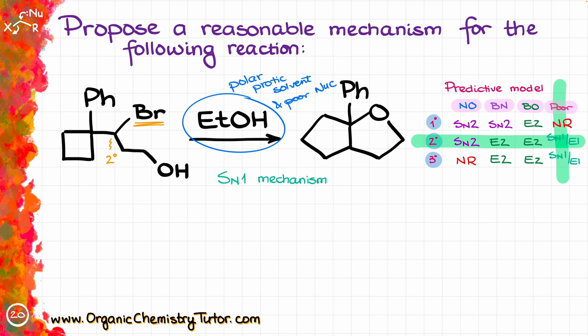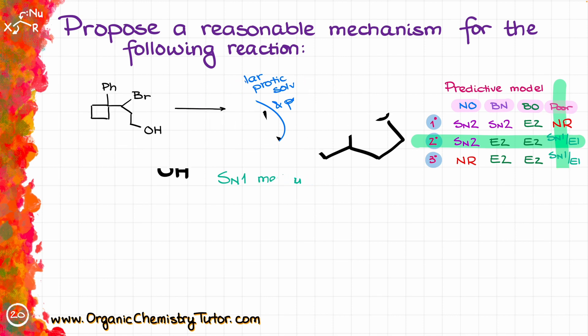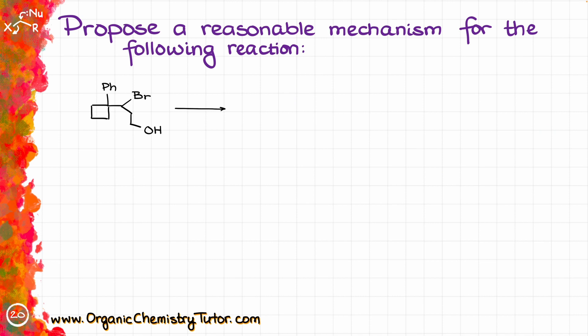First of all, let's redraw our molecules to make writing this mechanism more manageable. The first thing I'm going to do is the leaving group dissociation. I'm going to show the bromine popping off our molecule, giving us the corresponding secondary carbocation.